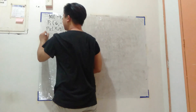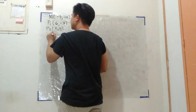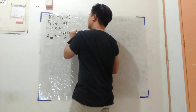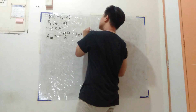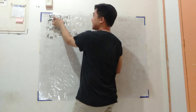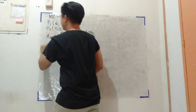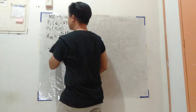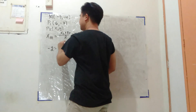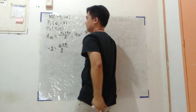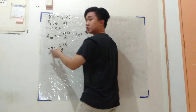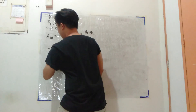Pero meron na pong formula na direct: xm is just the average of x1 and x2, while ym is y1 plus y2 all over 2. So that is negative 2 equals x1, which is 6, plus x2 — that is x kasi unknown — all over 2. So that's 2 times negative 2, that is negative 4; transpose ko si 6: x is equal to negative 10.